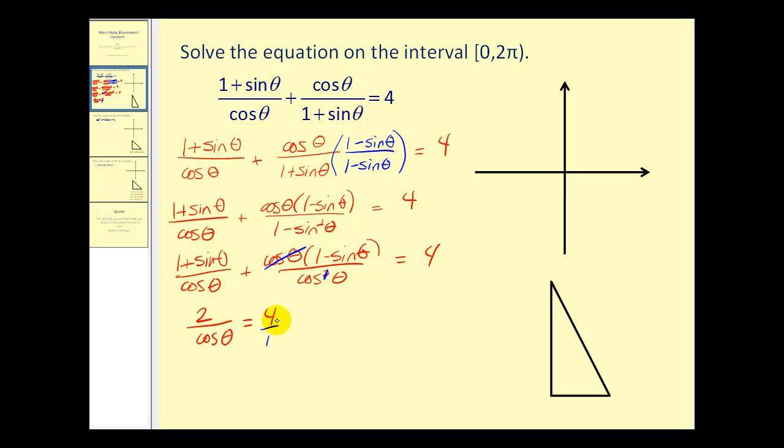Now to solve this equation for cosine theta, we may want to perform cross products. So four cosine theta equals two. Dividing by four, all this comes down to where is cosine theta equal to one-half?